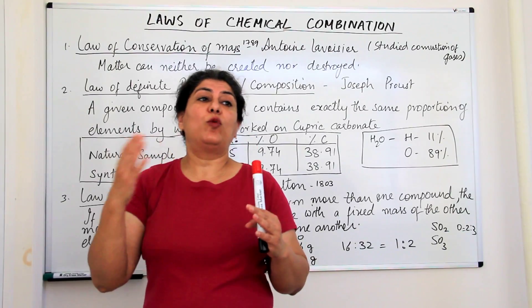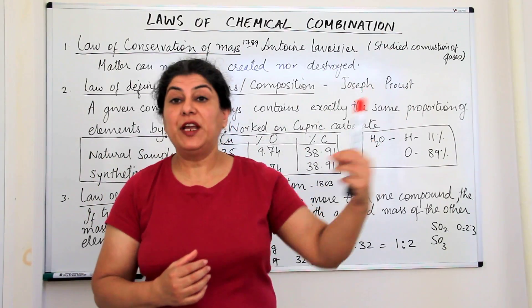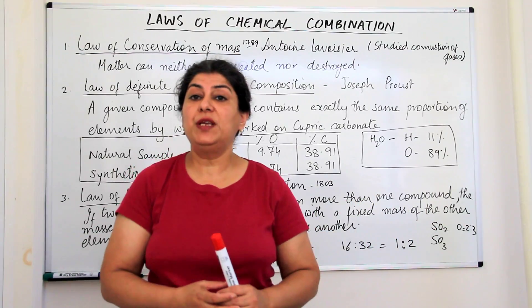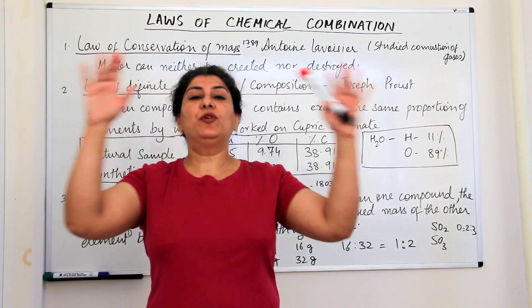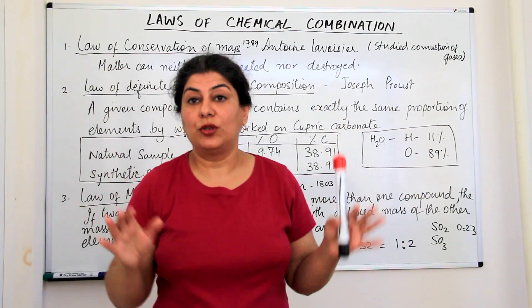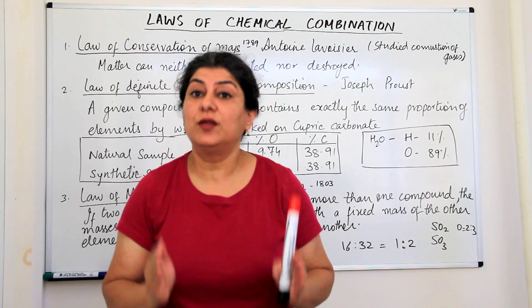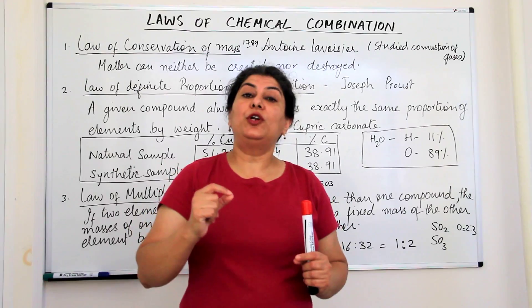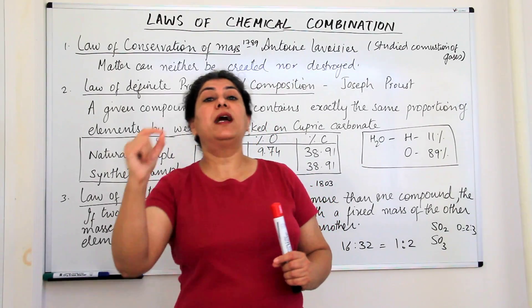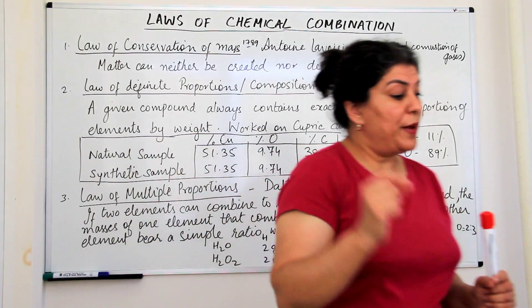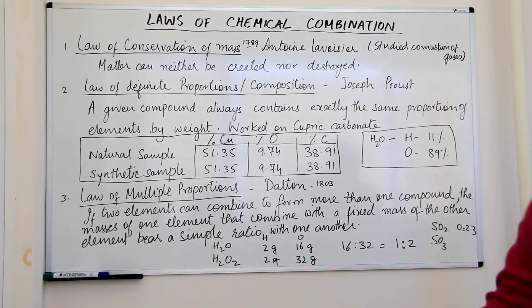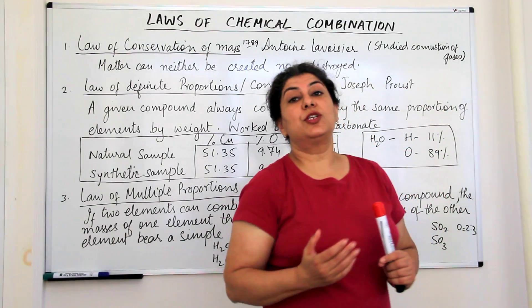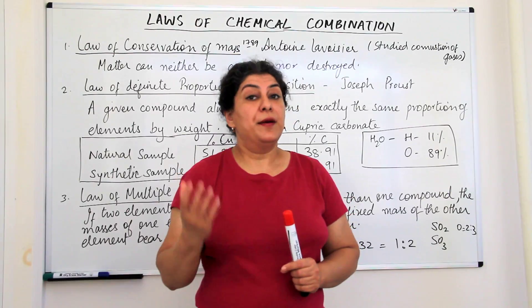If you take water from the tap or you collect some rain water or you get water from a stream or you get water from the ocean, purify whatever forms wherever you got the water from and then check the water molecule what does it consist of. We find that the water molecule invariably consists of hydrogen and oxygen in the ratio of the mass percentage, hydrogen is 11% by mass and oxygen is 89% by mass.